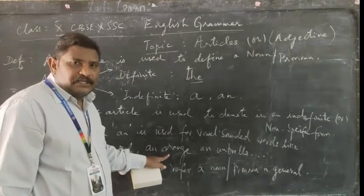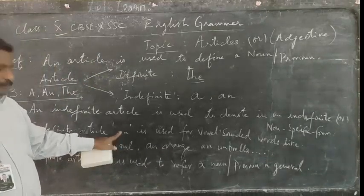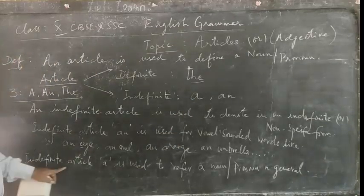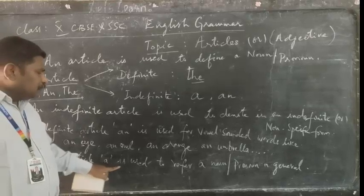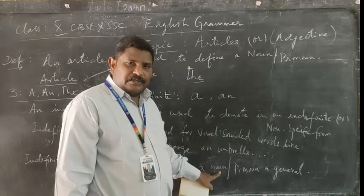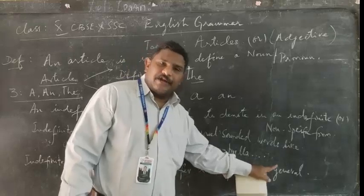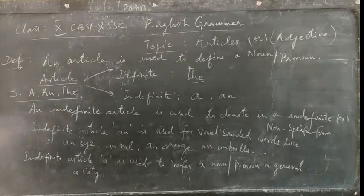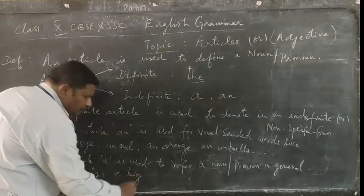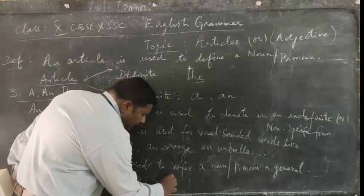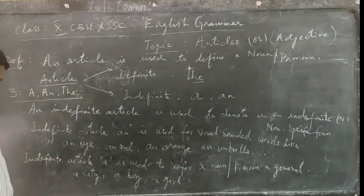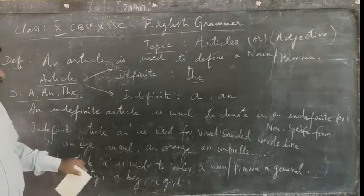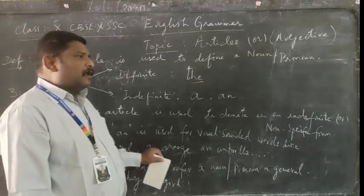Likewise, for words beginning with vowel sounds, we have to use AN as the indefinite article. Now for indefinite article A — A is used to refer to a noun which is used in general. For example, a city, a girl, a boy. When we say 'a boy', it could be any boy; when we say 'a city', it could be any city — not a particular one. So indefinite article A is used to refer to a noun or pronoun in general.